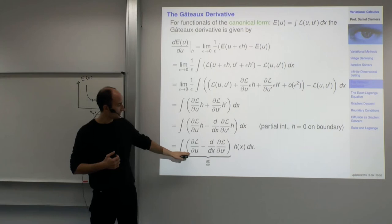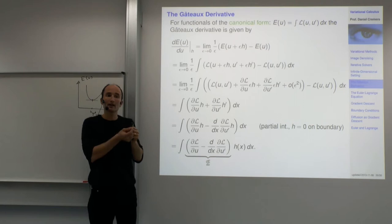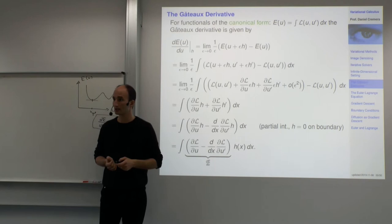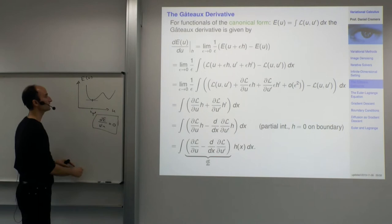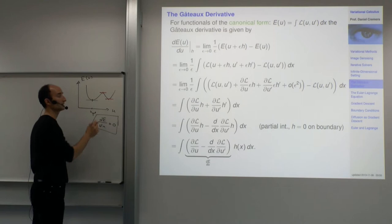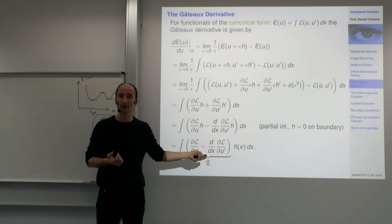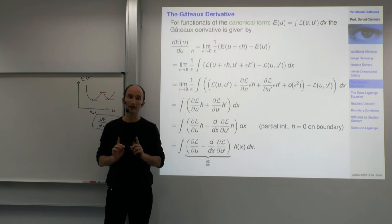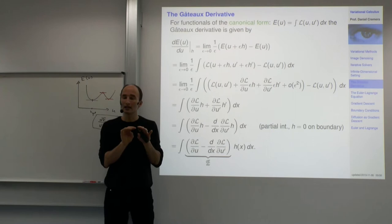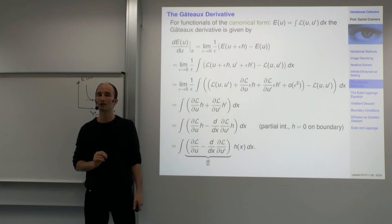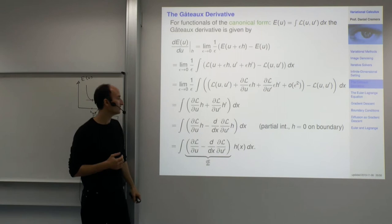At the extremum, the derivatives must be zero — the change of E in any direction must vanish locally. This is only a necessary condition for optimality, not sufficient in general: the derivative is also zero at local minima, maxima, and saddle points. The key point is that in infinite dimensions, this derivative must be zero for any choice of h — for any perturbation added infinitesimally, the energy should not change.